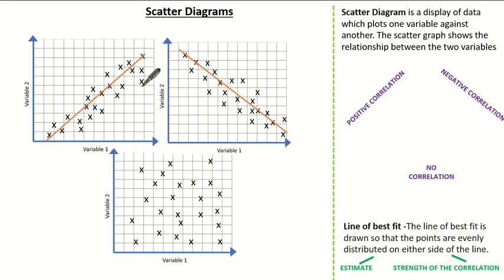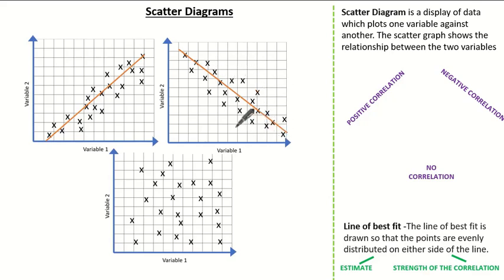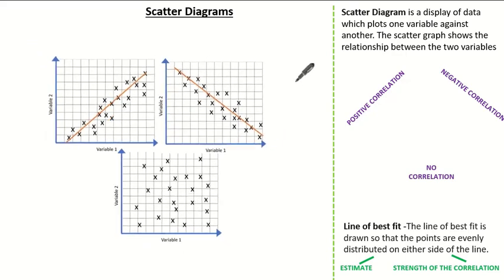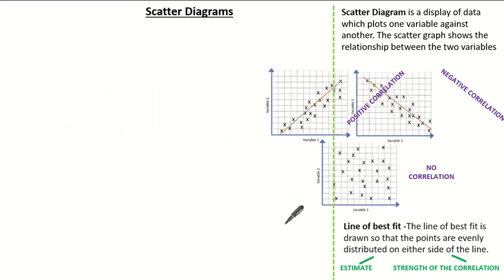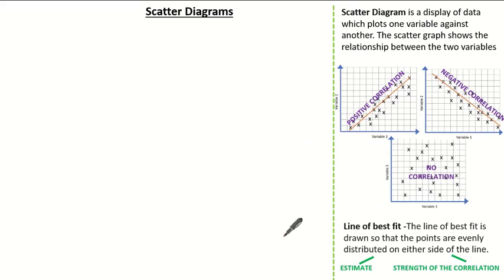You don't have to be absolutely perfect when doing this, as it is done by eye. You can see here it's not perfect, but we've pretty much aimed to get the same number of data points either side of the line. So now we have knowledge on scatter diagrams, our correlations, and our line of best fit.